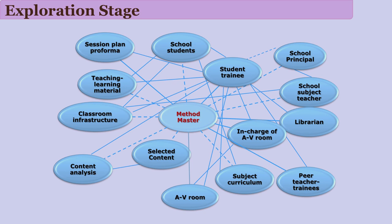Some components have indirect relationships. For example, the teacher trainee and the school principal may not meet directly, but the principal's nature and disciplinary rules have a direct impact on the teacher trainee. So dotted lines can be drawn to show this indirect relationship.